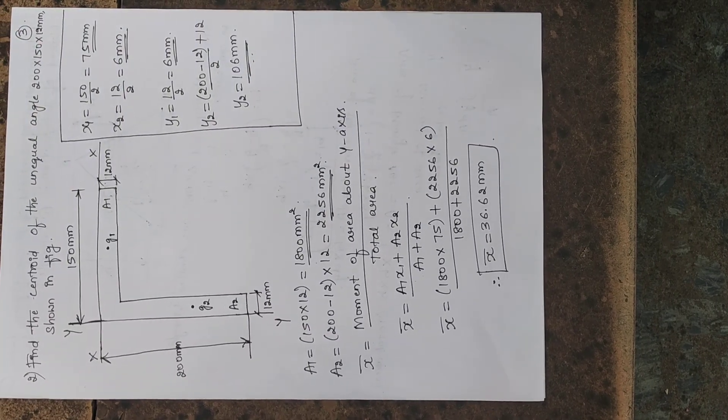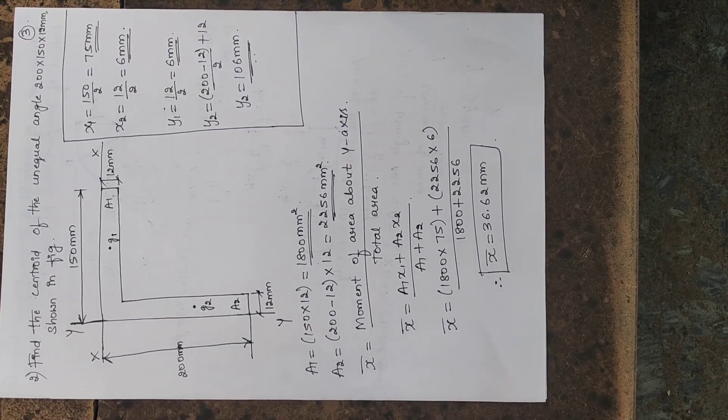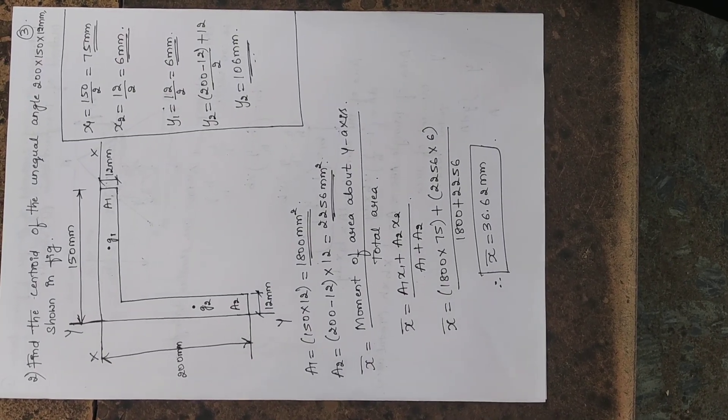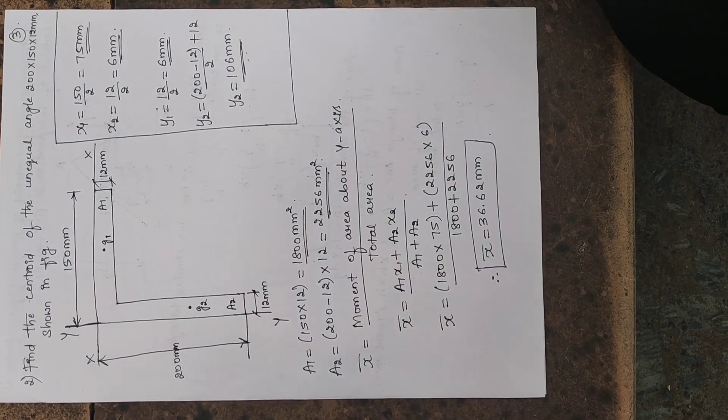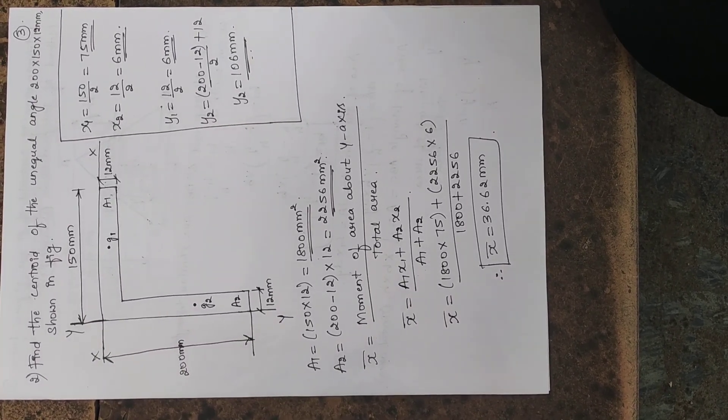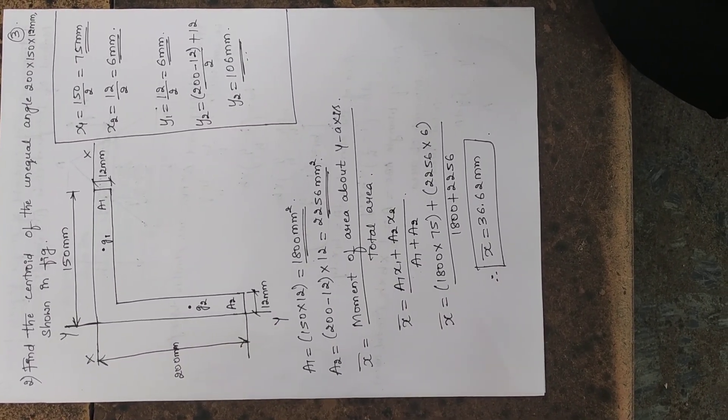Now, let us start finding the centroid of this unequal channel. To find the centroid, we first have to locate the symmetry or we have to find the symmetry of the channel.